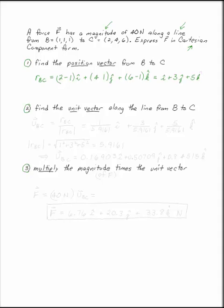Once you have the position vector, you can find the unit vector. The unit vector along BC is the position vector along BC divided by the magnitude of the position vector along BC. So we need to find the magnitude. The magnitude of RBC is the square root of its components squared. So one squared plus three squared plus five squared, which is 5.9161.